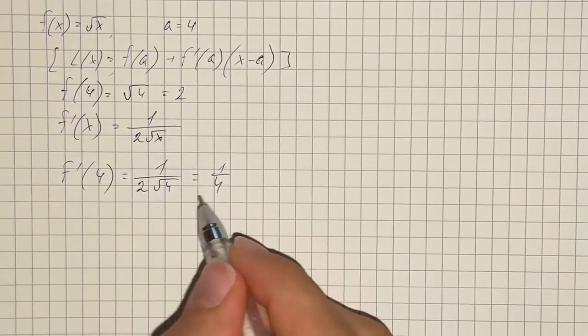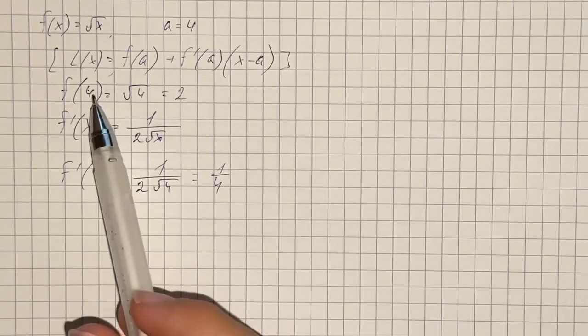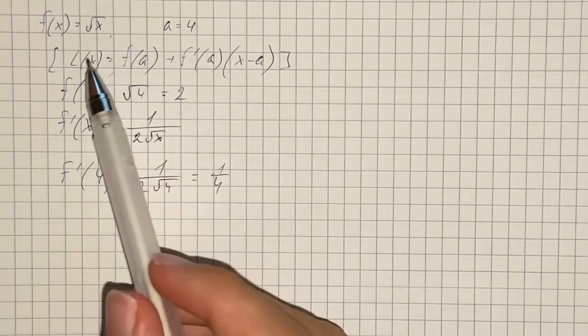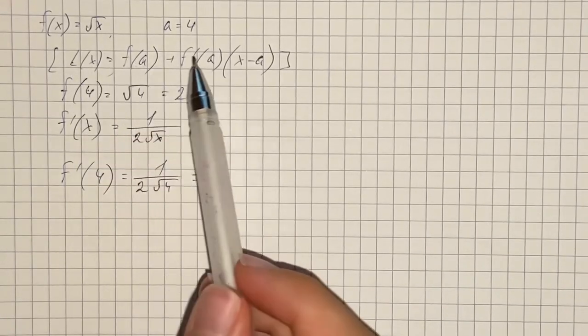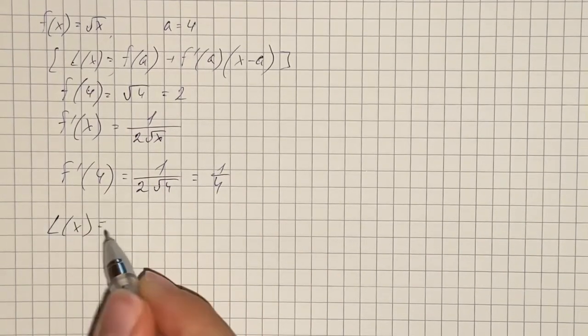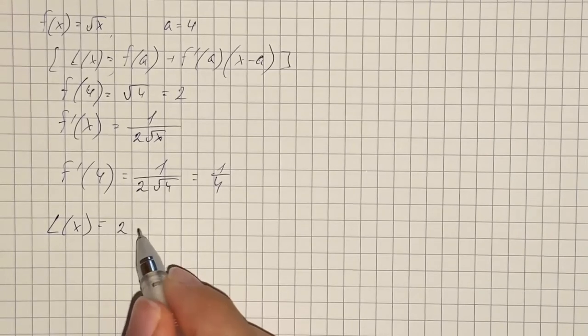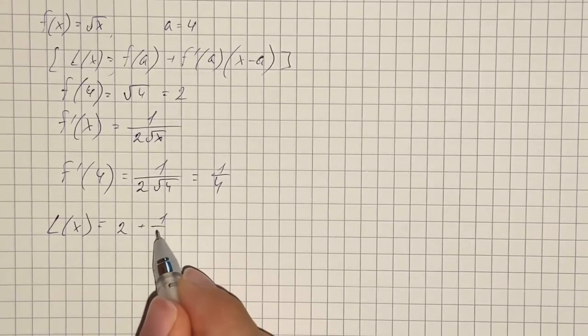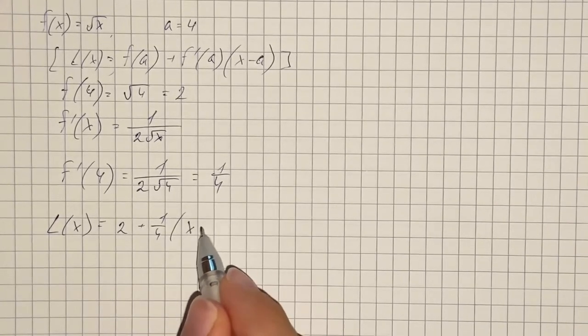And now we can substitute all these values into the formula of linearization and get that L of x equals 2 plus 1 fourth times x minus 4.